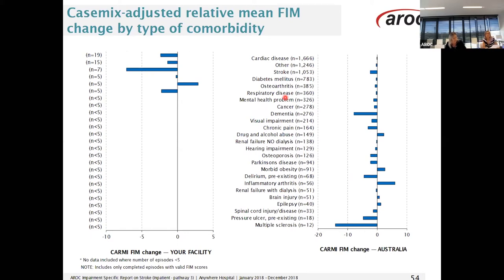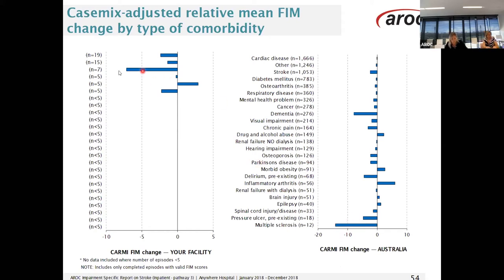Here we are now looking at the impact on case mix adjusted relative mean FIM change by comorbidity. Your service achieved lower than expected FIM change when an episode reported a comorbidity of cardiac disease. As well as keeping in mind the number of episodes, always make sure you check the values along the horizontal axis, as the values differ between your service and Australia. An example of how this impacts how you read the graph: the bar for multiple sclerosis in Australia shows a case mix adjusted FIM change of approximately negative 15 points lower, however the similar-sized bar for your service shows approximately seven points lower.